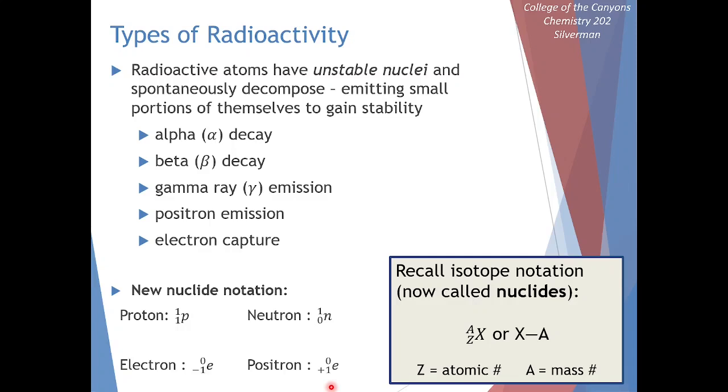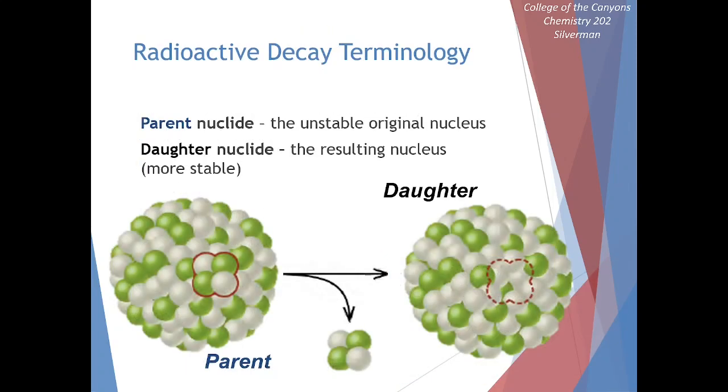Using this isotope notation is going to be extremely helpful. As we'll see in a moment, it will allow us to balance our nuclear reactions relatively easily. Our last bit of terminology before we jump into the types of nuclear reactions: we can call our parent nuclide our reactant in our nuclear reactions. This is our starting nucleus that will decompose into something slightly more stable. Our parent will turn into a daughter nuclide. This is the product in our nuclear reaction. It's going to be a little bit more stable than what we started with.